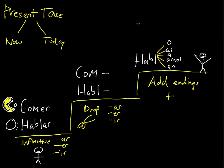Now we are going to add our present tense endings. So we have O, S, E, EMOS, and EN.